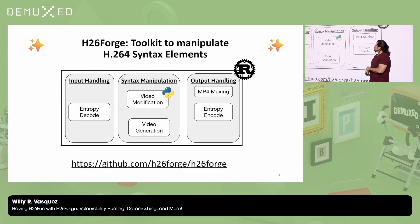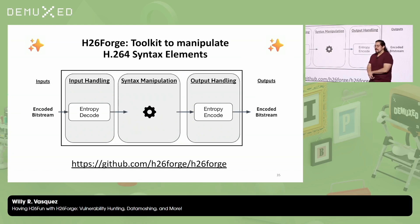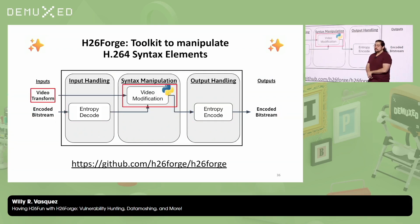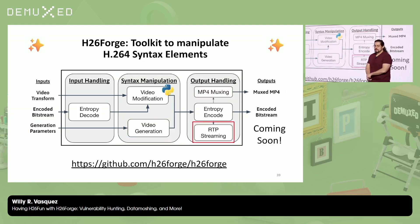H26Forge broadly is a toolkit to programmatically modify H264 syntax elements. It's written in 30,000 lines of Rust, and it's free, open source, available under an MIT license. Its key idea is that it abstracts out the bitstream representation — you take an encoded bitstream, decode each syntax element, keep it in memory where you can do whatever you want, and then re-encode it. While in memory, you can programmatically modify it using what we call video transforms — the small Python scripts I showed you. We can also completely ignore an input and pass in ranges for each syntax element to produce random out-of-bounds videos. We can produce the bitstream as well as a muxed MP4, and coming soon, RTP streaming.